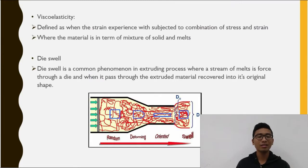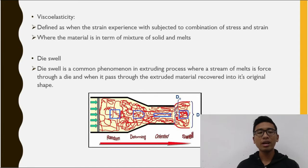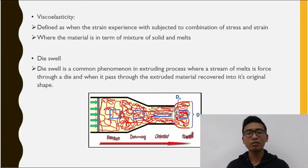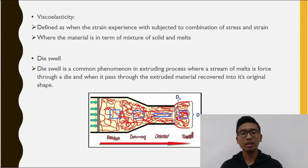Viscosity in polymer melts decreases with shear rate, thus the fluid becomes thinner. Viscoelasticity is a property of a material that determines the strain it experiences when subjected to a combination of stress and strain. It is possessed by both polymer solids and polymer melts. An example is die swell in extrusion, in which the hot plastic expands when exiting the die opening — this is known as extrudate swell, a common phenomenon in polymer processing.